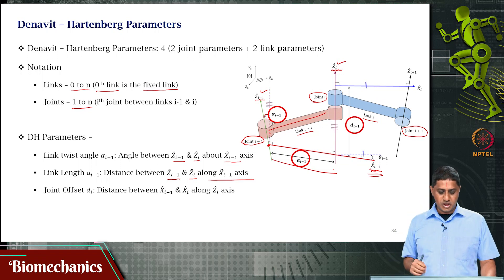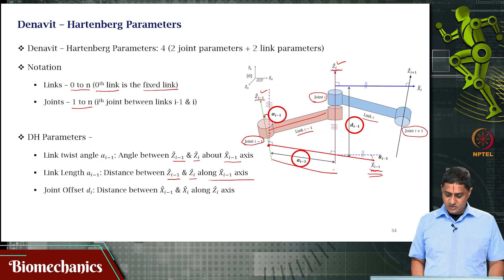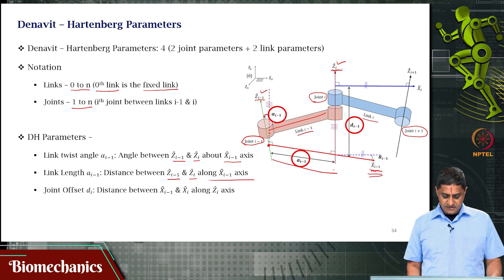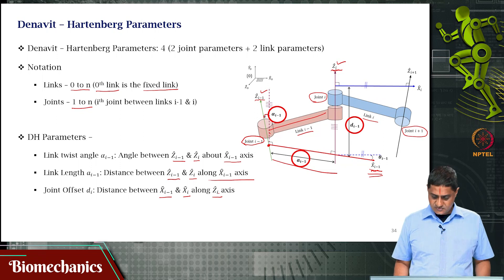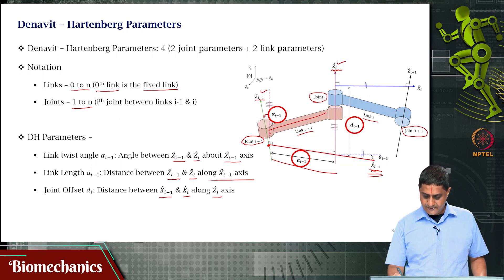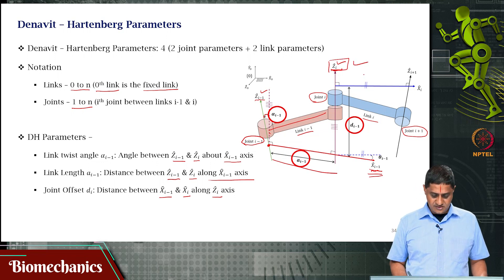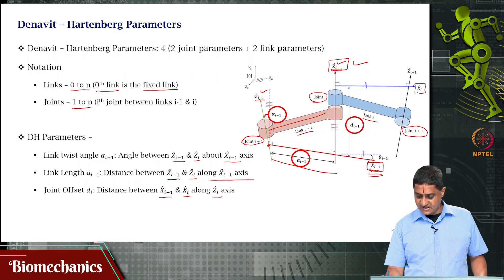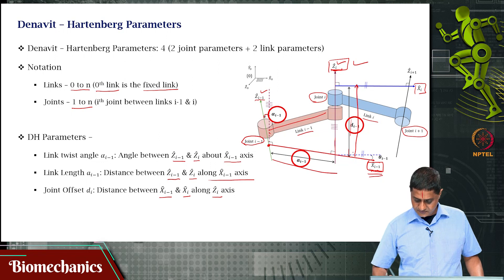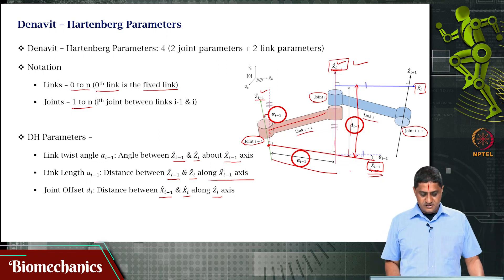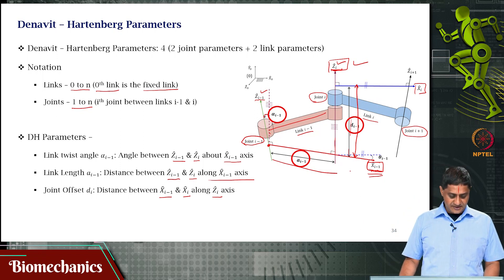Then there are two joint parameters. Joint offset d(i) is the distance between the X(i−1) axis and the X(i) axis along the Z(i) axis — that particular distance is called the joint offset d(i).